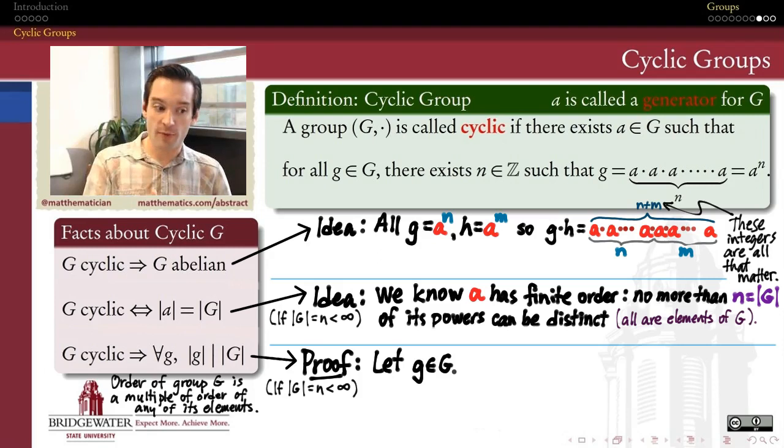First assuming that the order of my group is finite. Otherwise, there's not a whole lot to say, because what are the divisors of infinity? So if G is a finite group of order n, let me pick up an element of the group G. And I want to show that the order of G has to divide n.